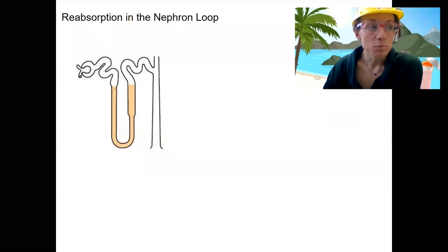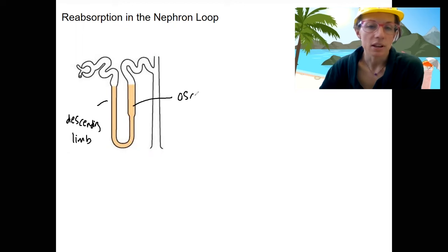So reabsorption, we've got a descending limb and an ascending limb. As you can see, the ascending limb is composed of a thin and a thick portion.